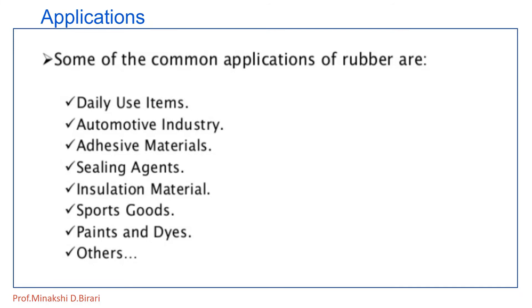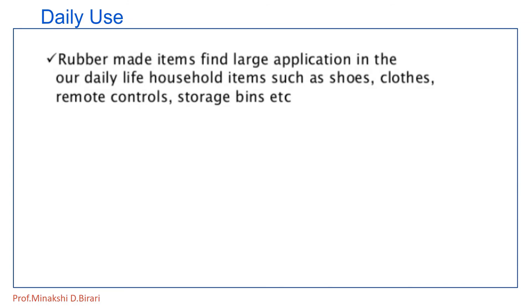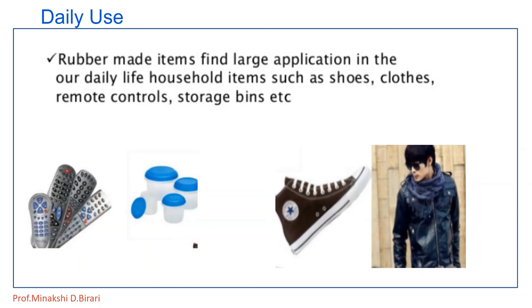Now, what are the applications of natural and synthetic rubber? Some common applications are: daily use items, automotive industry, adhesive materials, sealing agents, insulation material, sports goods, paints and dyes, and other purposes. Rubber-made items find large applications in our daily life — household items such as shoes, clothes, remote controls, and storage bins.